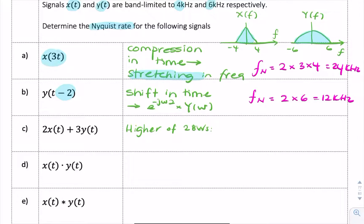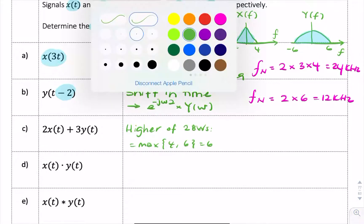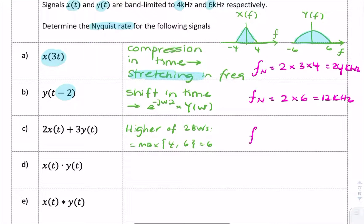So when we add, we look for the higher of the two. And so that's like saying what's the maximum of 4 and 6, and that's 6. So our Nyquist rate would simply be 2 times 6, which is 12 kilohertz. So in this case, it doesn't matter what the signal X is because the bandwidth of Y happens to be higher.